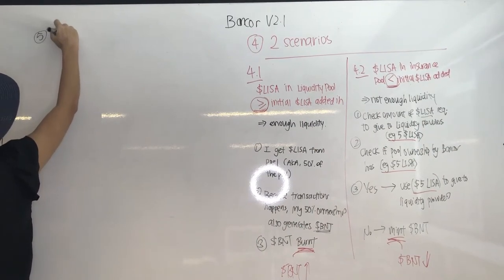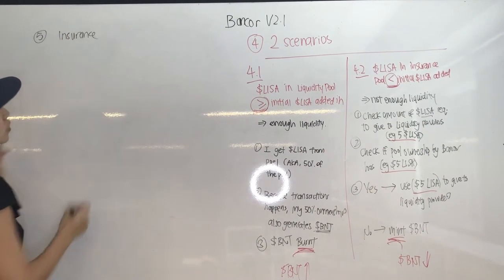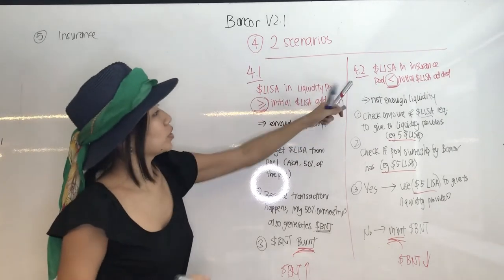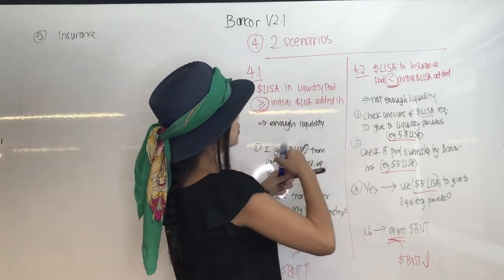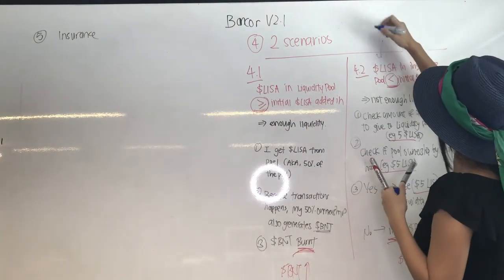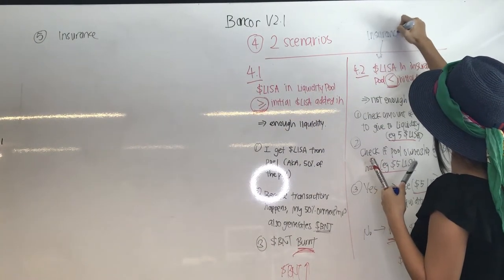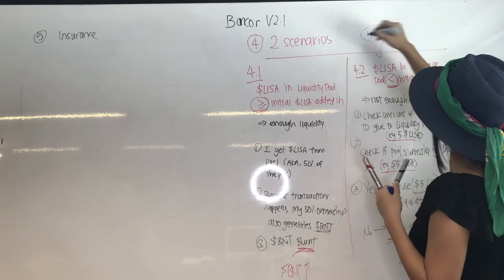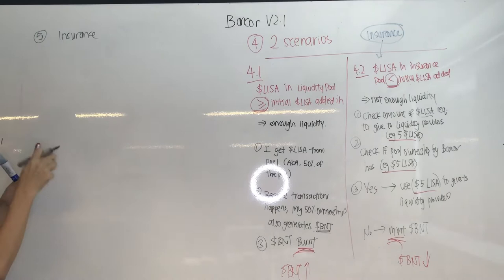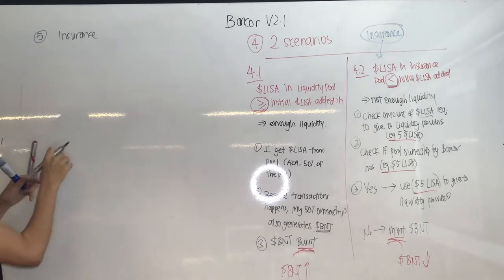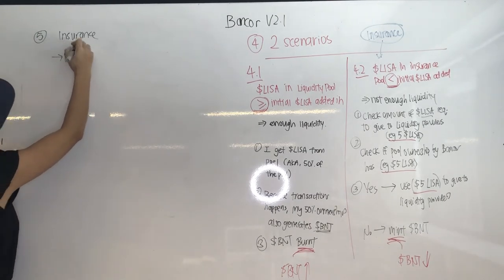Insurance really plays a role only in the second scenario we talked about, where there isn't enough liquidity to return the tokens to liquidity providers. The purpose of this specific insurance is to protect liquidity providers from impermanent loss — only impermanent loss for liquidity providers.